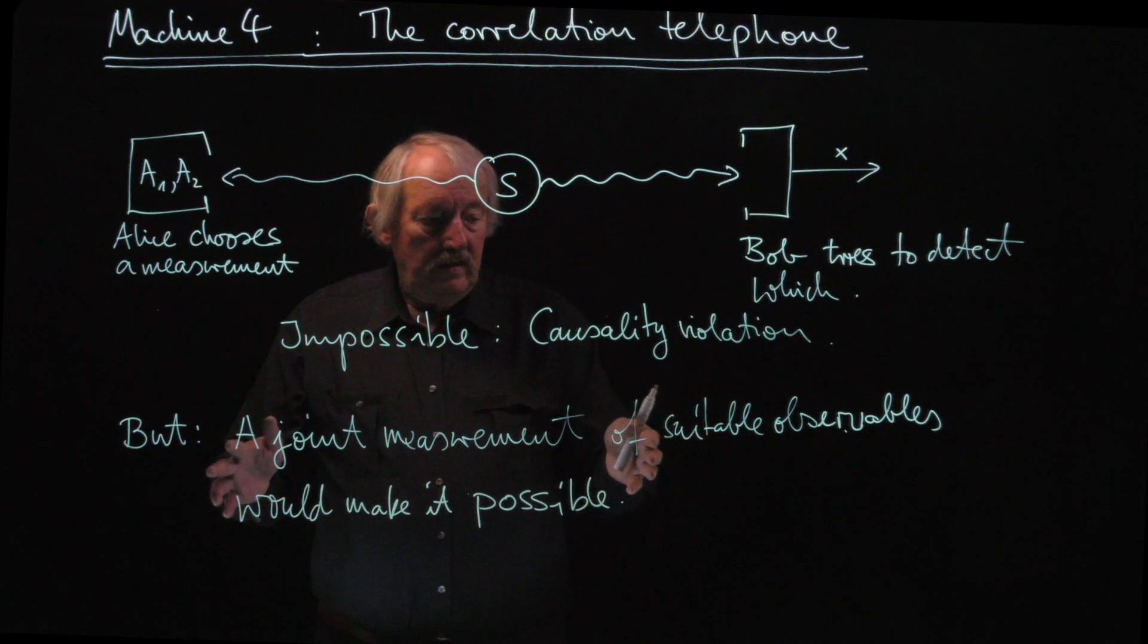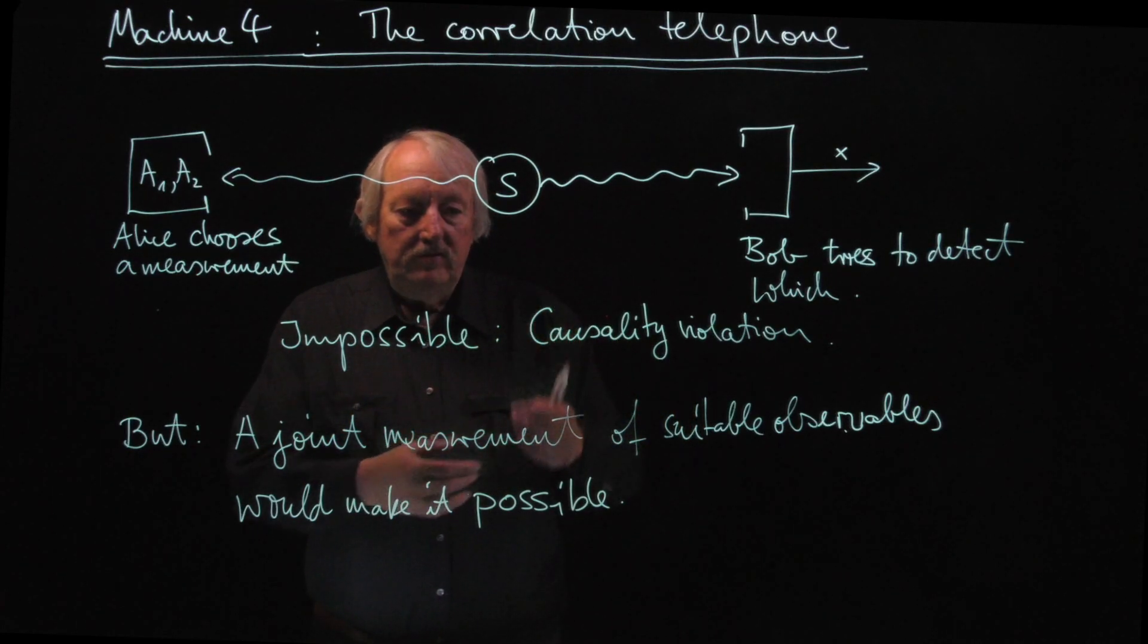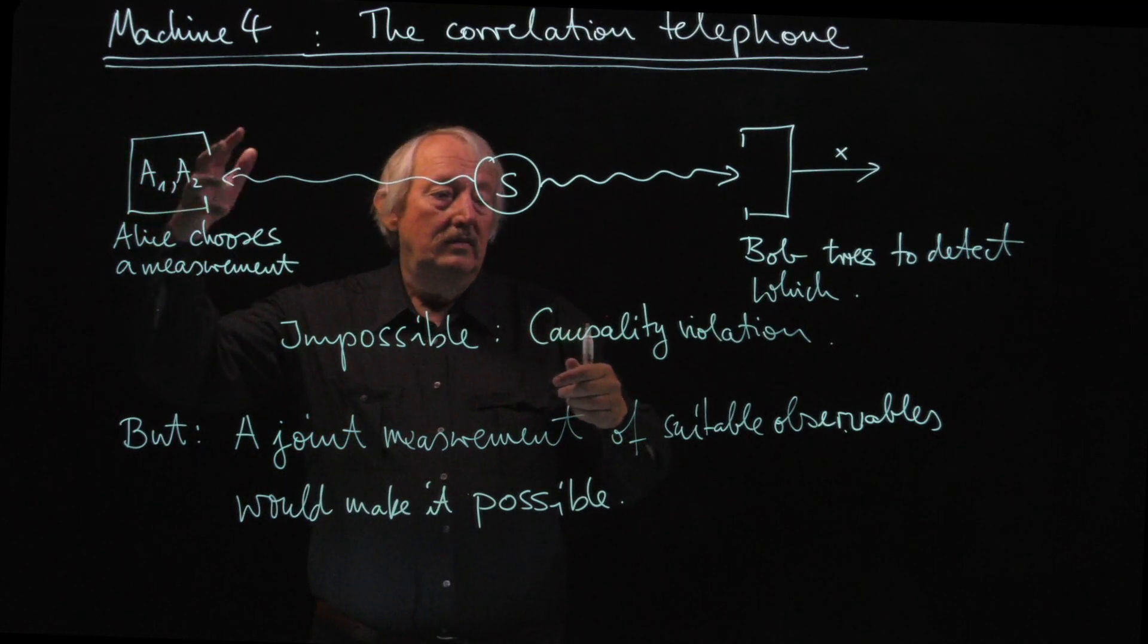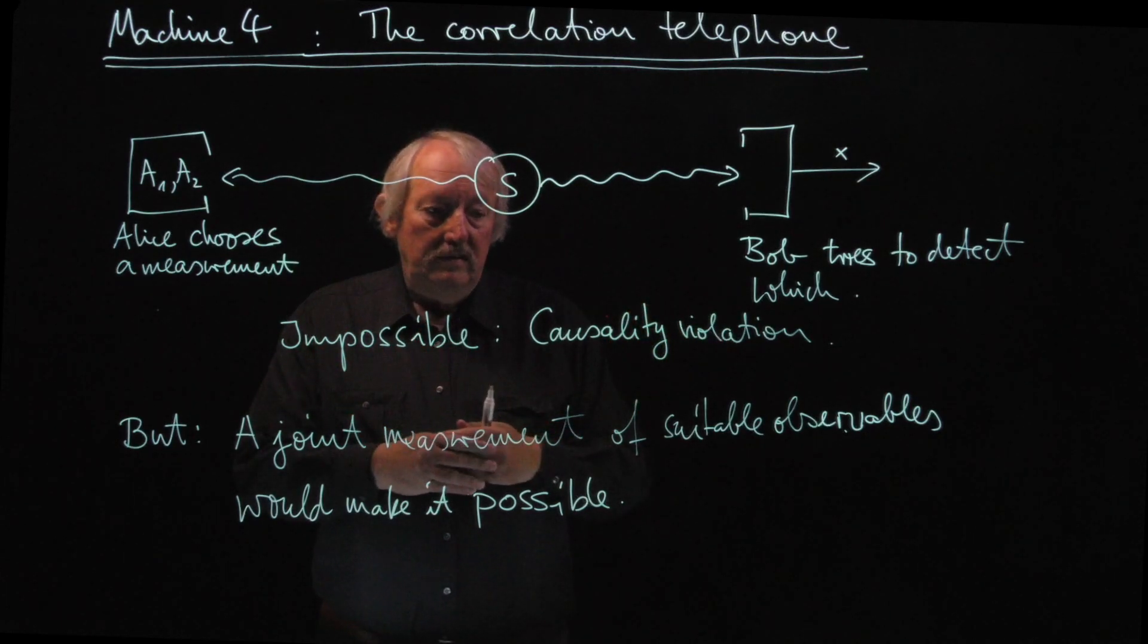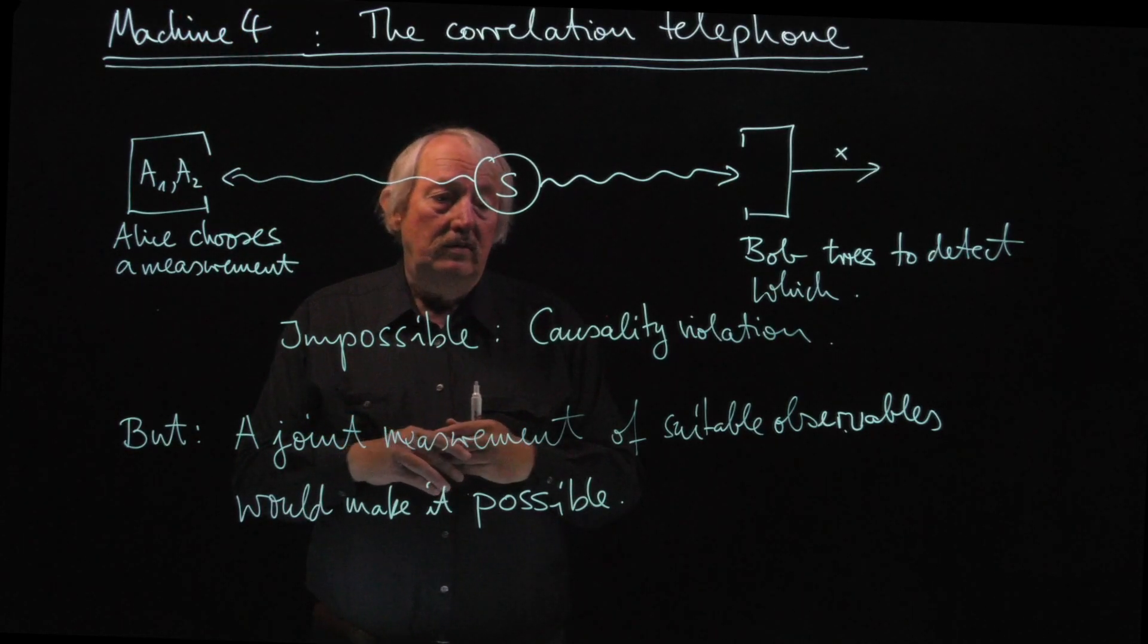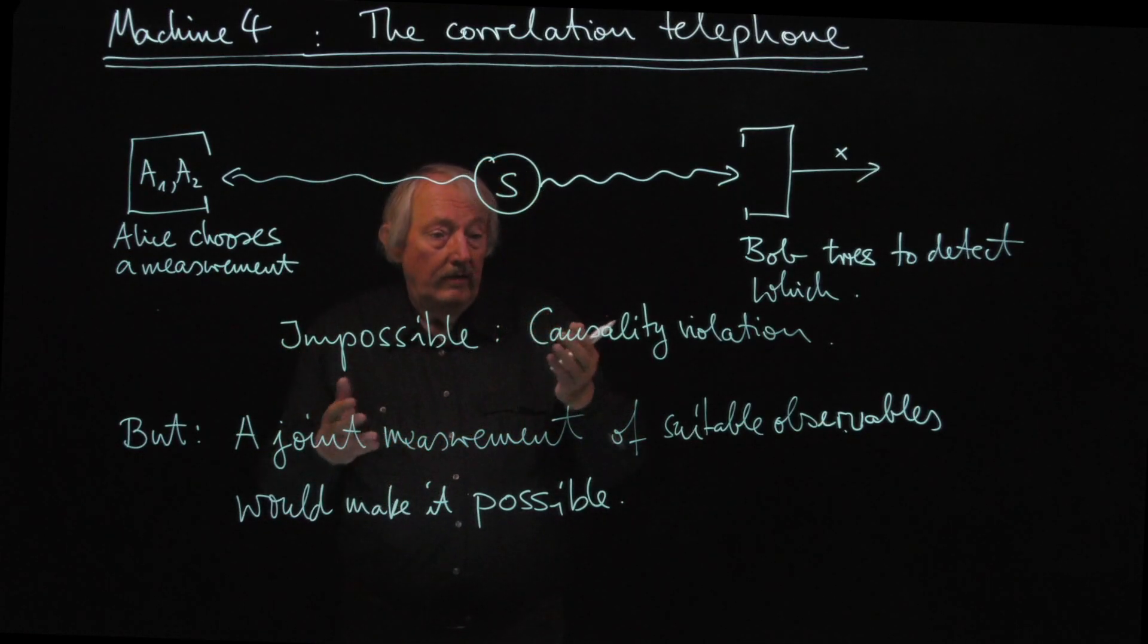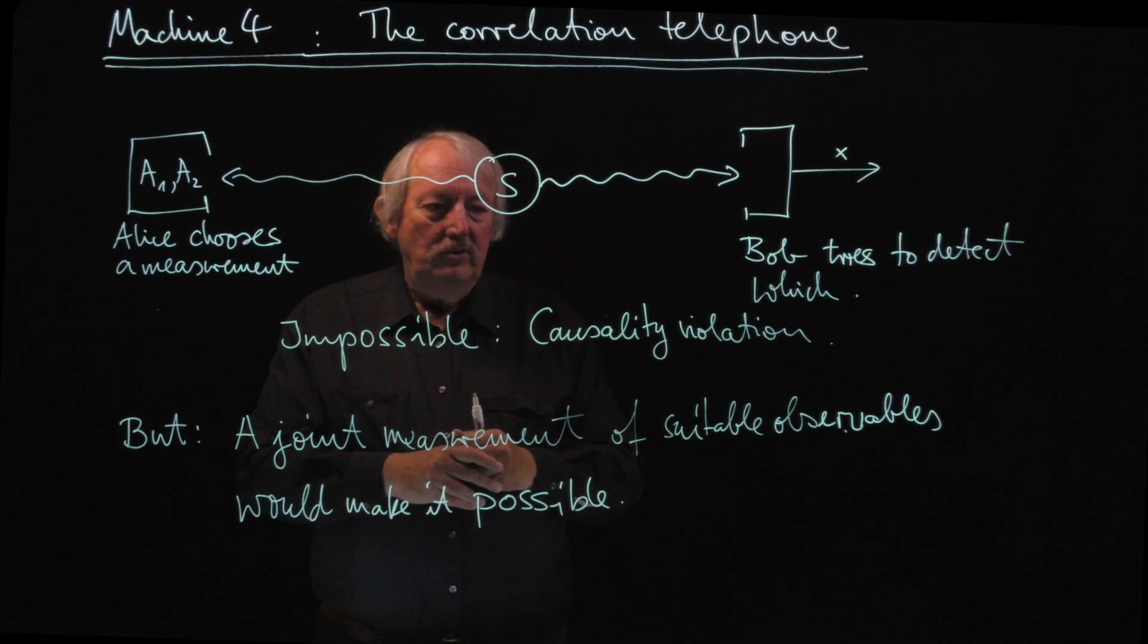then I can use that to signal, to get signals from Alice to Bob. Then either I believe in causality and I'm then sure that joint measurements are not generally possible. And then the whole hierarchy of machines that I showed to you is not generally possible. Or I have to discard causality, which is a pretty tough thing to do.